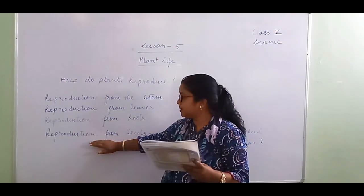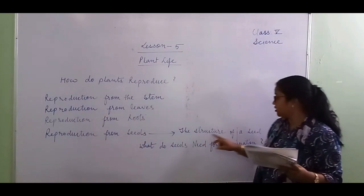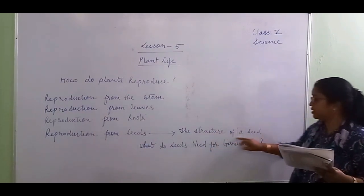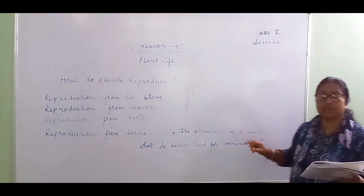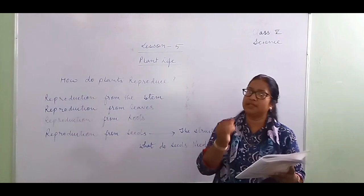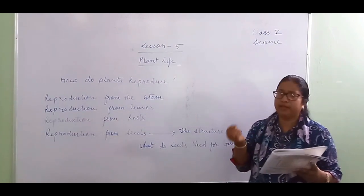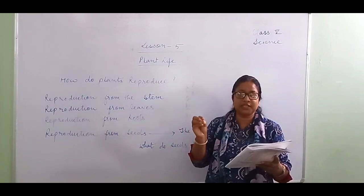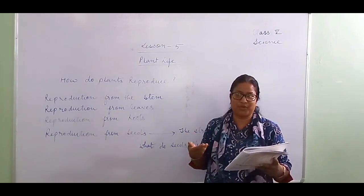Looking at the structure of a seed — there are different types of seeds. Mango seeds are very big and lemon seeds are very small, but from either a small or big seed, new baby plants come out.